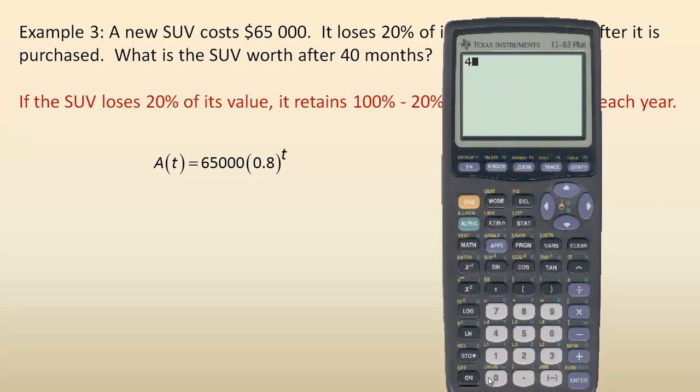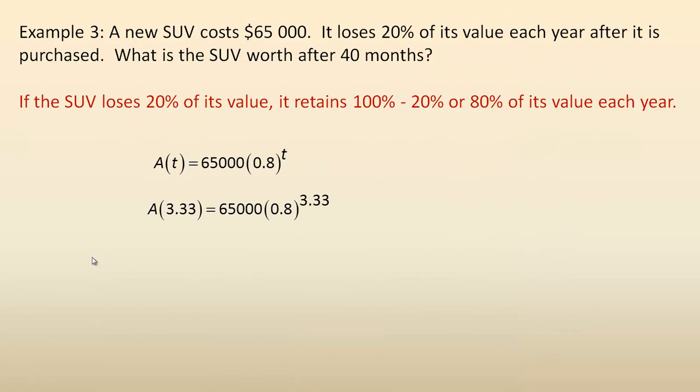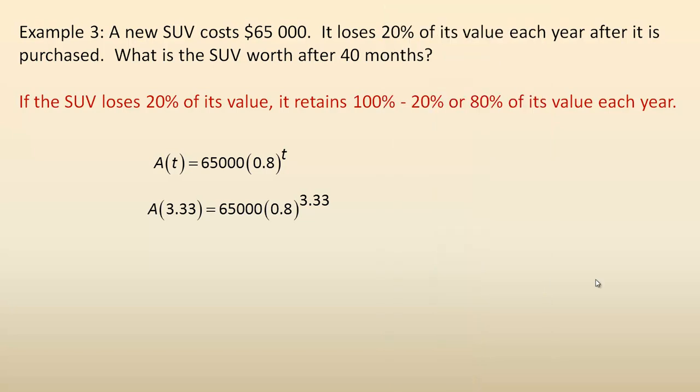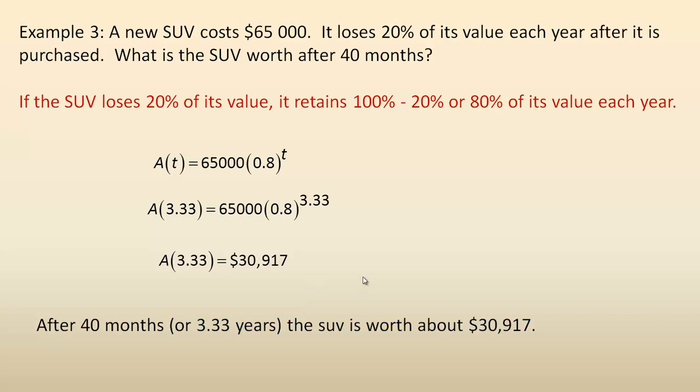So 40 months divided by 12 months in a year, that's about three and a third years. I'll put 3.33 in place of time in my formula: 65,000 times 0.8 to the power of 3.33. That gives us about $30,900. I'm going to round to the nearest dollar, so $30,917 is what it would be worth after about 40 months. So that's some typical questions you can solve using exponential functions, either growing problems or decay problems. And that's the end of the tutorial.